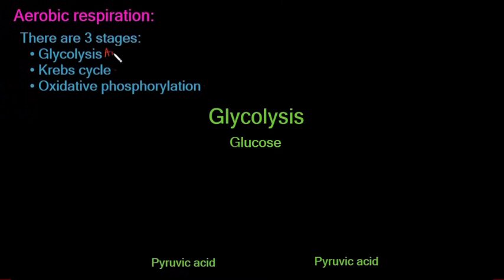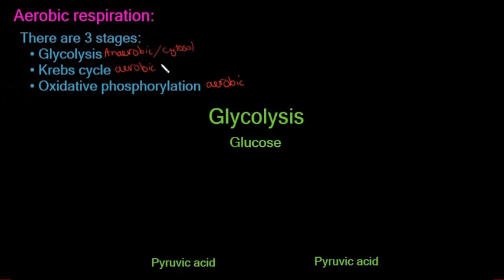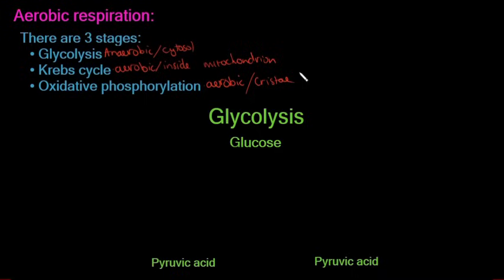The three stages occur in different locations. Glycolysis takes place in the cytosol, outside the mitochondrion. The Krebs cycle takes place inside the mitochondrion. Oxidative phosphorylation takes place in the folded membranes — the crista.